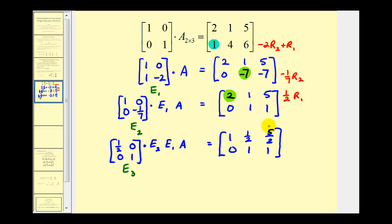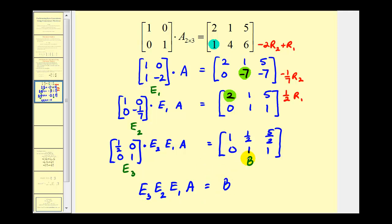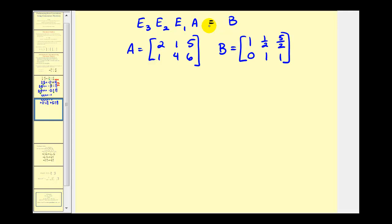Now we have enough information to solve the system. Focusing on the left side: elementary matrix E₃ times E₂ times E₁ times matrix A performs the same row operations we performed on the right side — let's call this matrix B. So E₃ times E₂ times E₁ times A equals matrix B, which is our two-by-three augmented matrix in echelon form, where A was the original augmented matrix and B is the augmented matrix in echelon form.